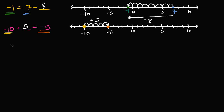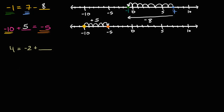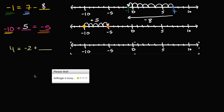Let's do another one. Let's say we had four is equal to negative two plus blank. We can do this the same way. Let's get our number line out here. Our goal is to get to four — positive four right there. We're starting at negative two. Negative two plus some amount — and it's clear we're going to be moving to the right by one, two, three, four, five, six. So we moved to the right by six, meaning we added six. Negative two plus six is equal to four.